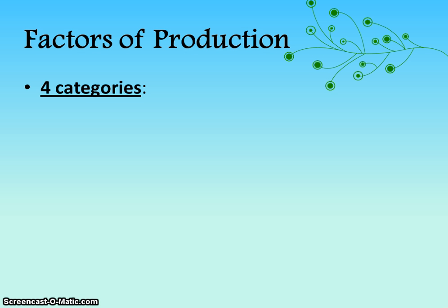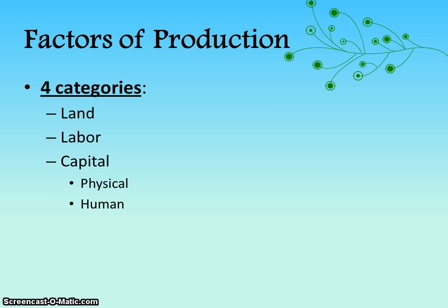So just a quick review. The factors of production are land, which are natural resources; labor, which is the human input; capital — we have both physical and human capital as subcategories, covering machinery, equipment, and tools; and then the entrepreneur is the person that combines the land, labor, and capital to create goods and services. So as we're talking about the factors in factor markets, we're talking about anything that would fit into these categories.